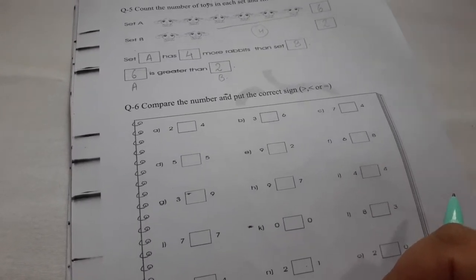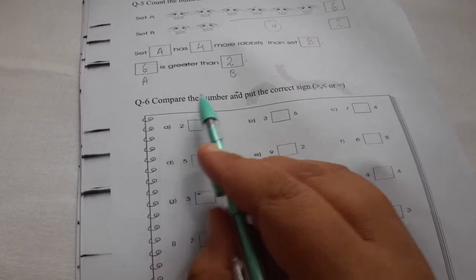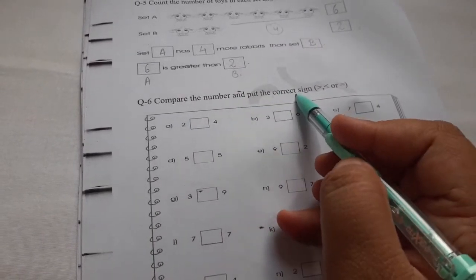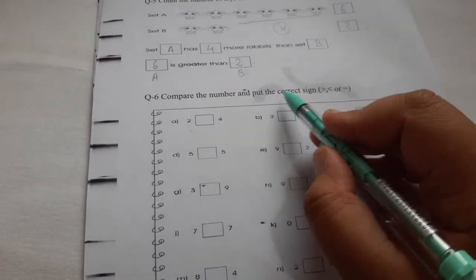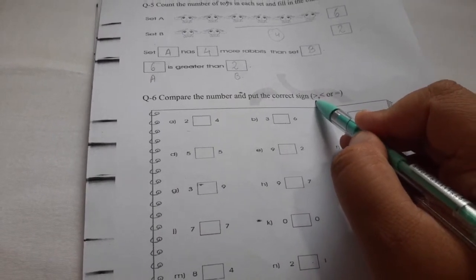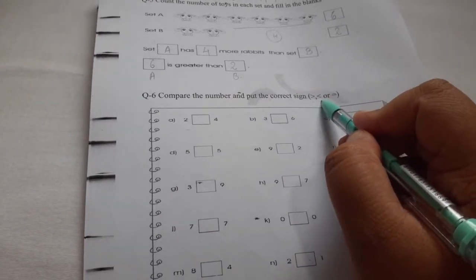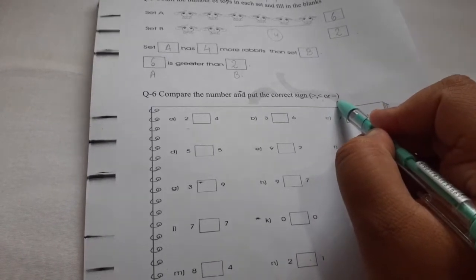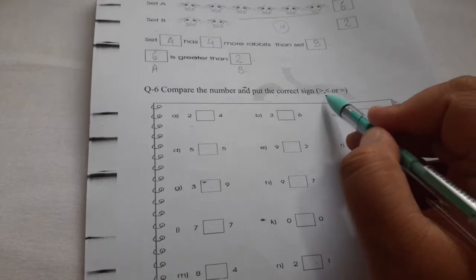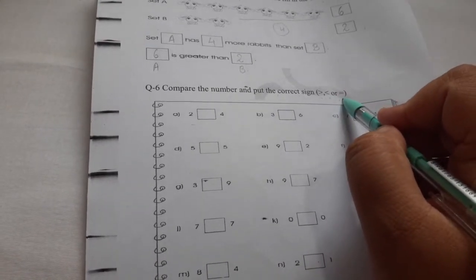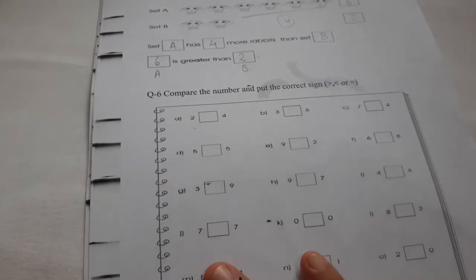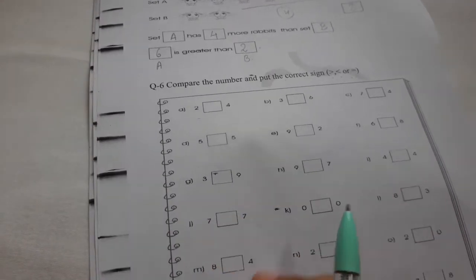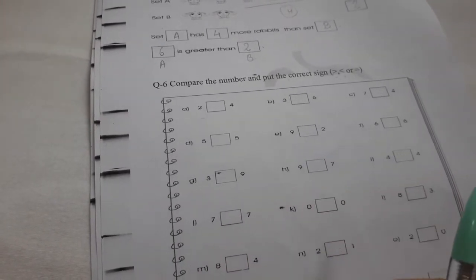Let us go to question number 6. Compare the number and put the correct sign. You have to compare these two numbers and you have to put the sign. Which sign? This is for greater than or more than, less than and equal to. Greater than, smaller than, equal to. You remember that I told you that the crocodile constantly eats the large number. So, the crocodile's mouth will open toward the larger number. This is the simple way you can remember this.